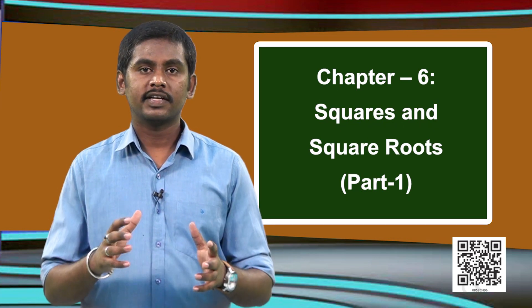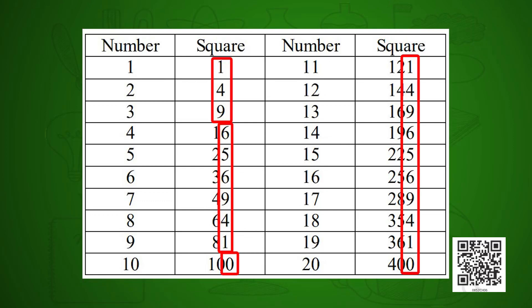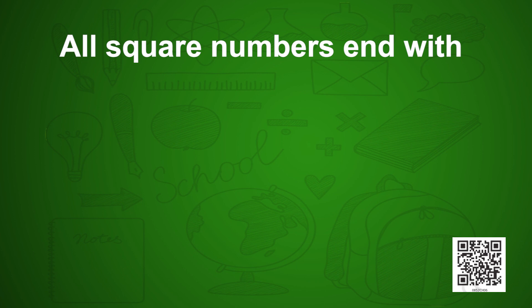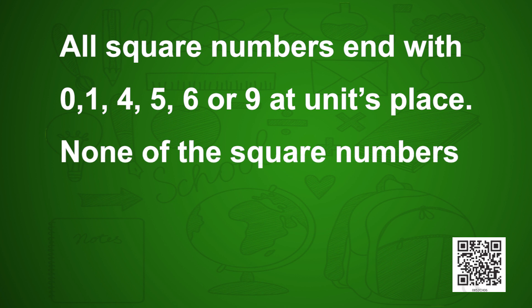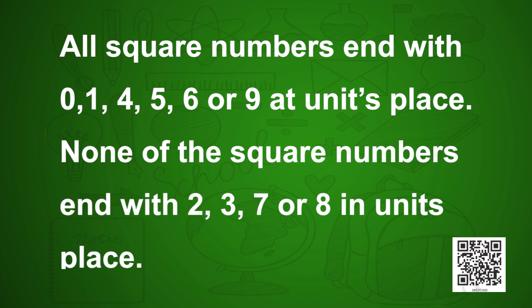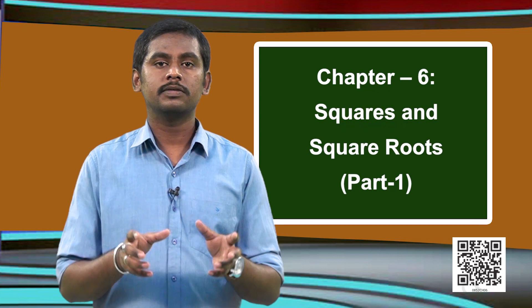When we observe all these squares, we can list out some properties. For example, looking at the table, none of the digits in the units place will be 2, 3, 7, or 8. So we can only see the numbers 0, 1, 4, 5, 6, or 9 at the units place. This is the first property: a square number ends with 0, 1, 4, 5, 6, or 9 in its units place.